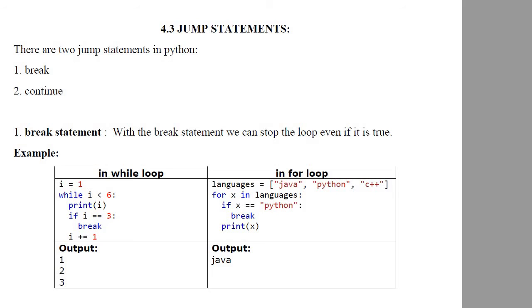Let's see an example with while loop: i equals 0, while i is less than 6, if i equals 3 then break, i plus equals 1, then print i. So when i reaches 3, the break statement will terminate the loop.